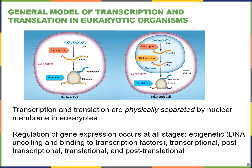Looking at regulation of gene expression in eukaryotes: transcription and translation are physically separated by the nuclear membrane. Gene expression can be regulated at the epigenetic level, where we control how tightly DNA is wrapped around histone proteins. It can also be regulated at the transcriptional level through transcription factors.